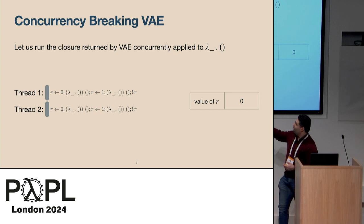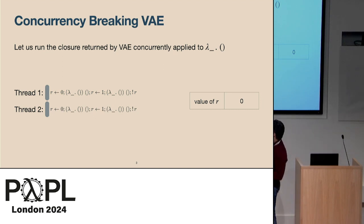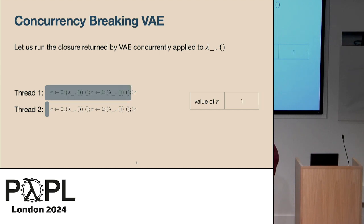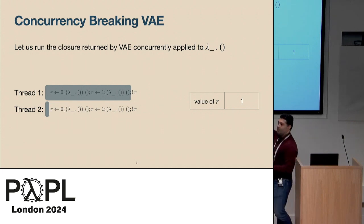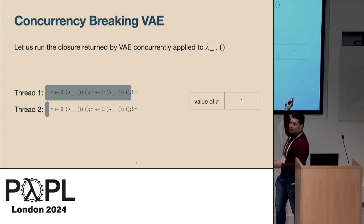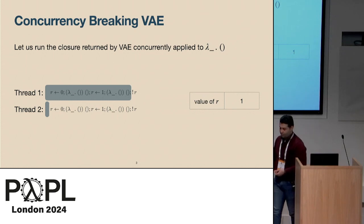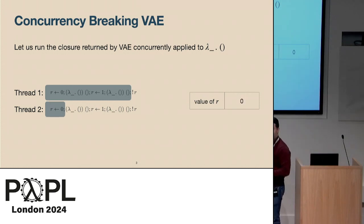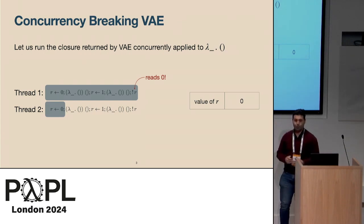To understand this better, let's look at a concurrent execution that breaks this property. Here I'm taking the body of the closure and running it with a trivial f function. We can first schedule the first thread up to before reading the reference — at that point the reference has value 1. But we can schedule the other thread to write 0 and then go back to the first thread and read 0. So here, we broke this property.